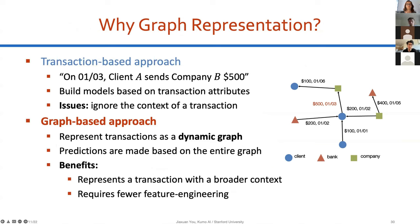Why do we need GraphGym here? In the past, people used transaction-based approaches — for example, a SQL database showing that on a specific date, client A sends $500, and prediction models are built from transaction attributes alone. Without considering graph structure, you ignore the broader context: client A may also send money to company C right after this transaction, information that is lost without a graph view. With a graph-based approach, we represent transactions as a dynamic graph and make predictions based on the entire graph, capturing broader context with less feature engineering.